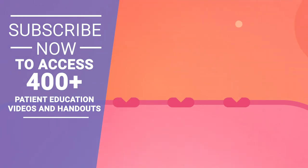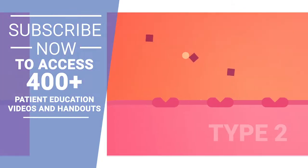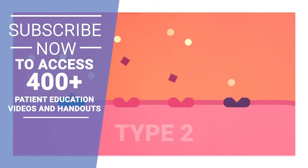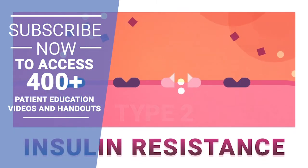When you have type 2 diabetes, your body cannot easily move glucose out of your blood and into your cells, meaning you need more insulin to keep glucose from building up in your blood. This is called insulin resistance.